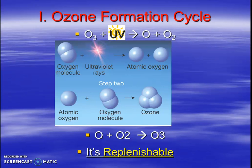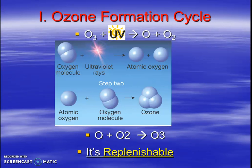To understand the stratosphere, we really have to understand ozone. And ozone forms through a cycle. Here is the ozone formation cycle. It is a replenishable resource, meaning it should come back on its own. It is not alive, which is why we don't call it renewable — that's why we categorize it as replenishable.